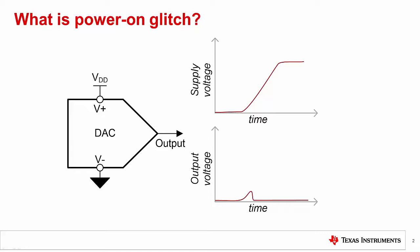These transients can cause problems in applications where the DAC is driving some sensitive input, for example a sensor, a motor, or an actuator.